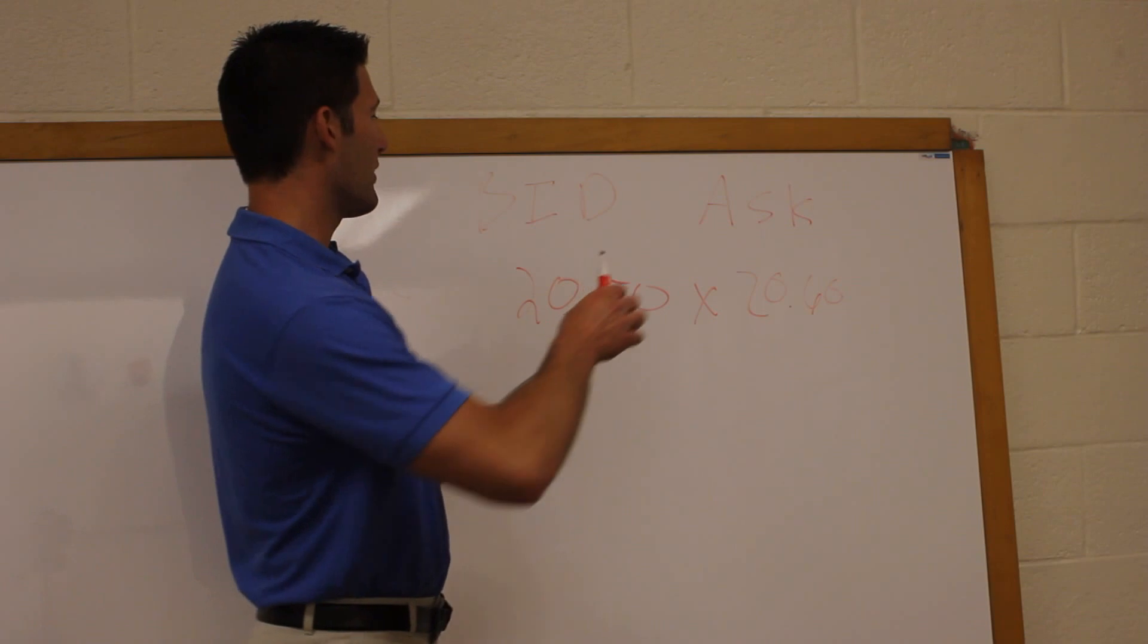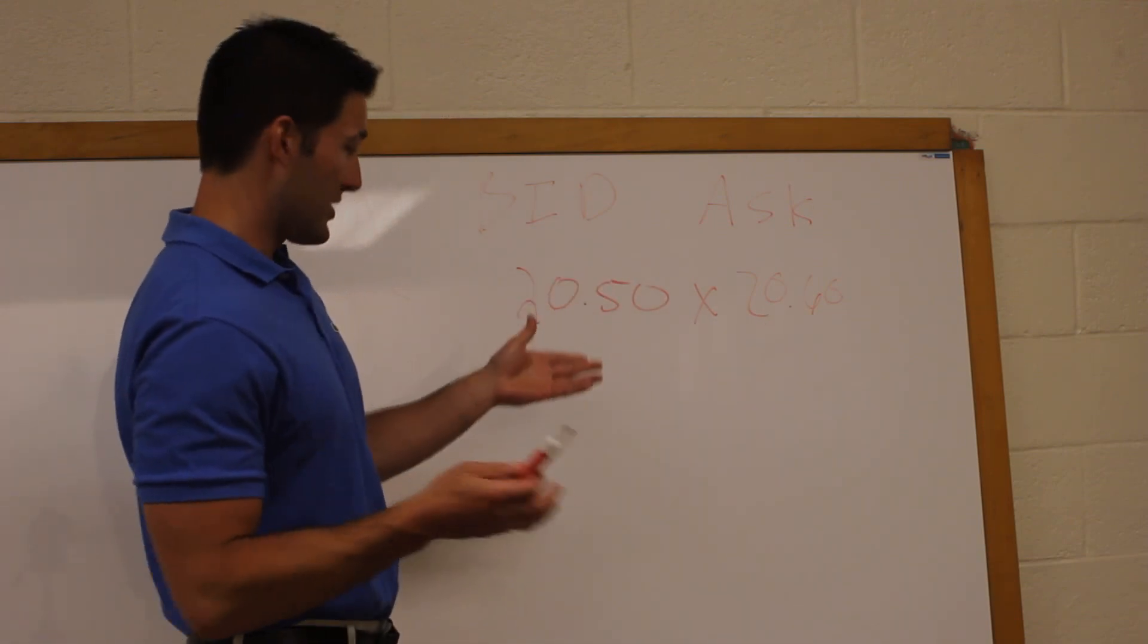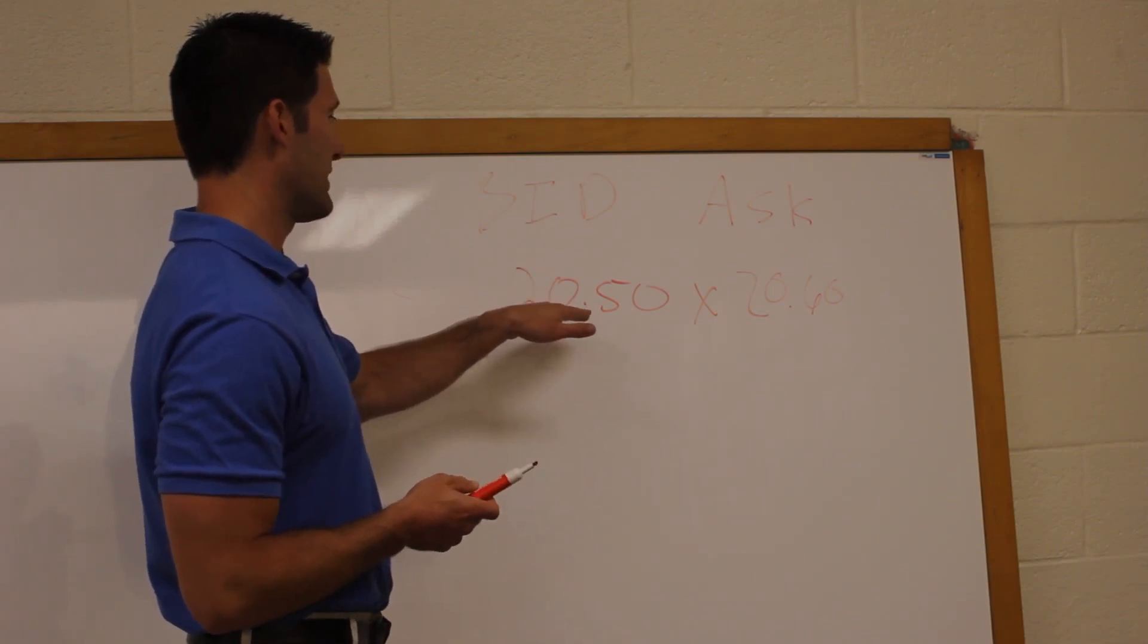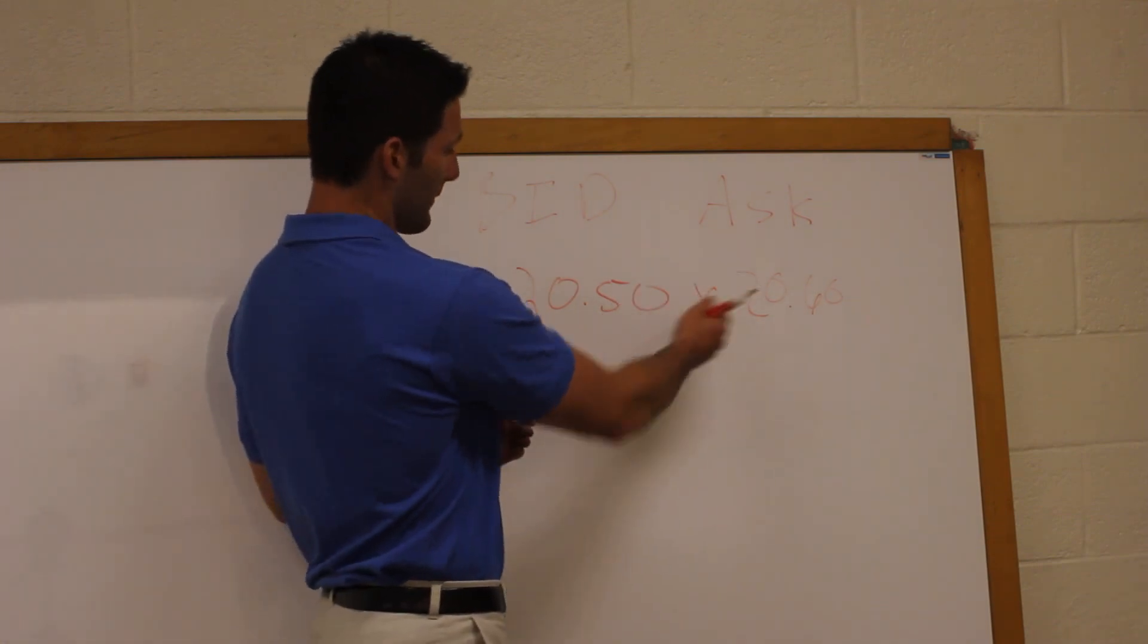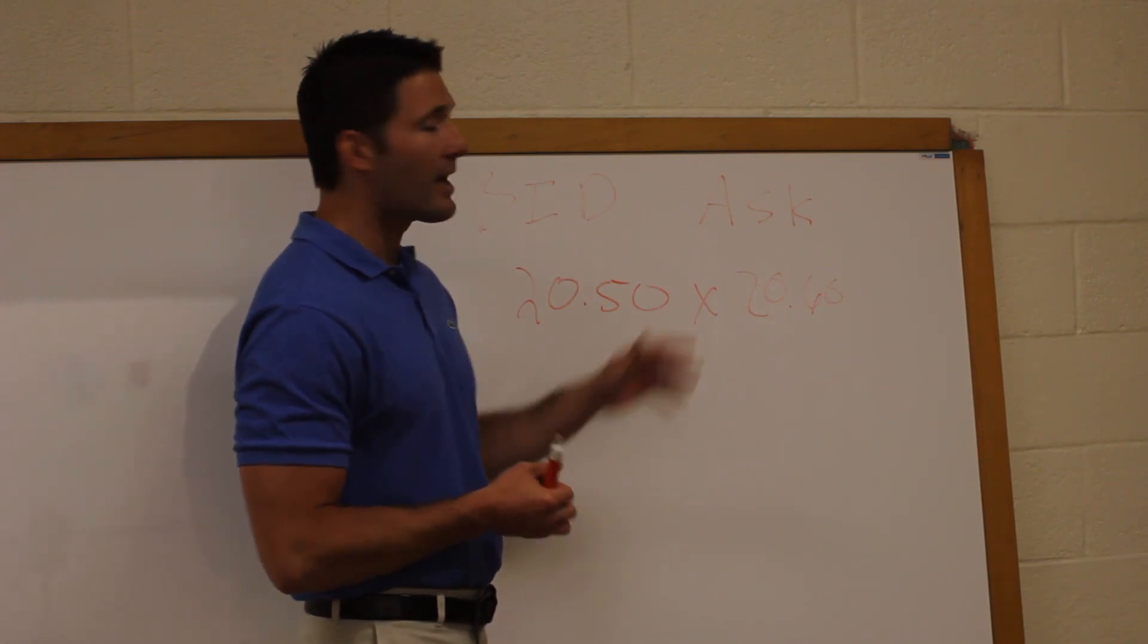Now you can tell that there's a difference in price. So this stock, for the sake of the example, is going by $20.50 by $20.60. The difference between the two is known as the spread.